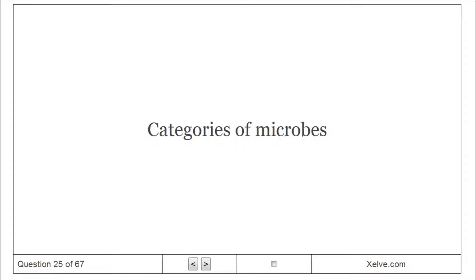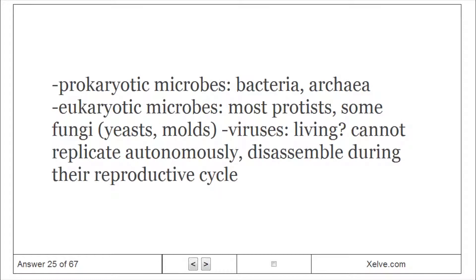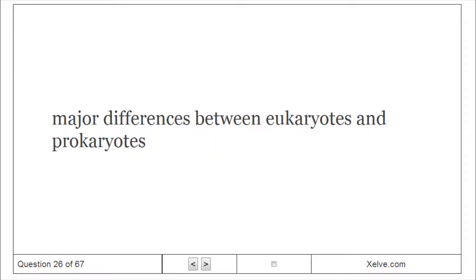Categories of microbes: prokaryotic microbes include bacteria and archaea. Eukaryotic microbes include most protists, some fungi, yeasts, and molds. Viruses are not truly living, cannot replicate autonomously, and are disassembled during their reproductive cycle. Major differences exist between eukaryotes and prokaryotes.